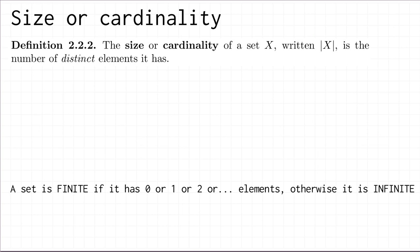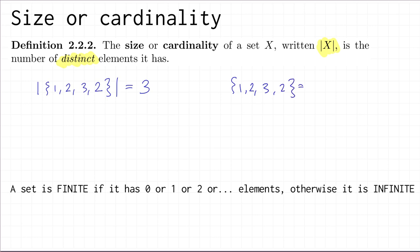The final thing to define in this video is size or cardinality. The size or cardinality of a set X, written with vertical lines like an absolute value symbol, is the number of distinct elements it has. For example, the cardinality of {1, 2, 3, 2} — the number of distinct elements is 3, because 2 appears twice but {1, 2, 3, 2} equals the set {1, 2, 3}. So that set has size 3.